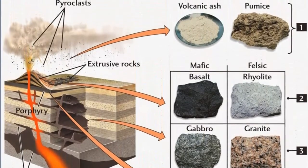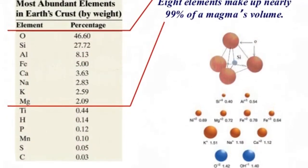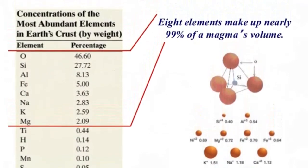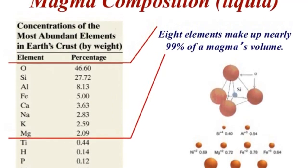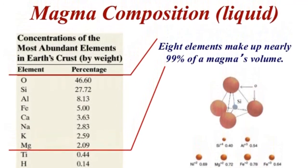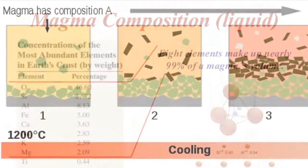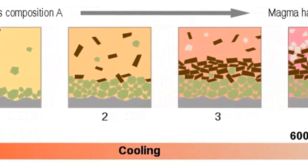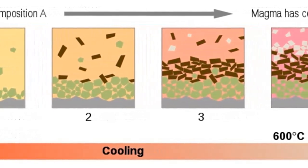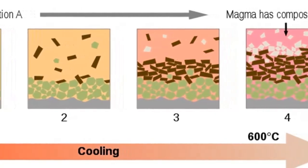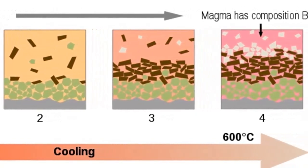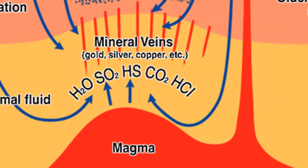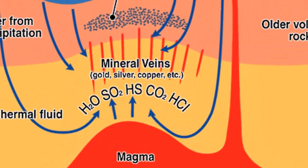Most magmas consist of three distinct parts: a liquid component, a solid component, and a gaseous phase. The liquid portion, called melt, is composed of mobile ions of those elements commonly found in Earth's crust. Melt is made up mostly of ions of silicon and oxygen, along with lesser amounts of aluminum, potassium, calcium, sodium, iron, and magnesium.